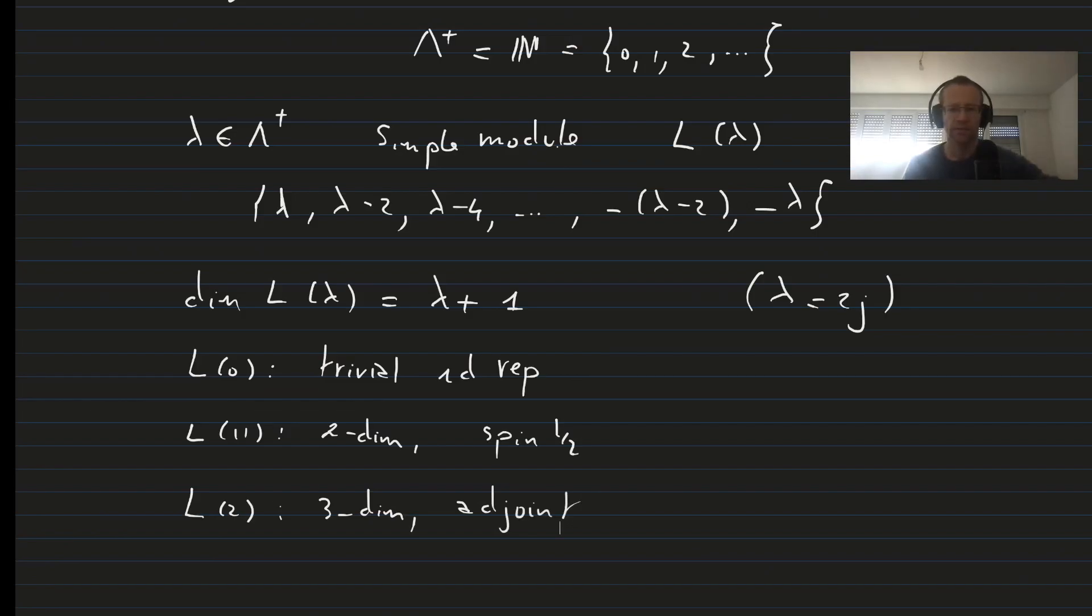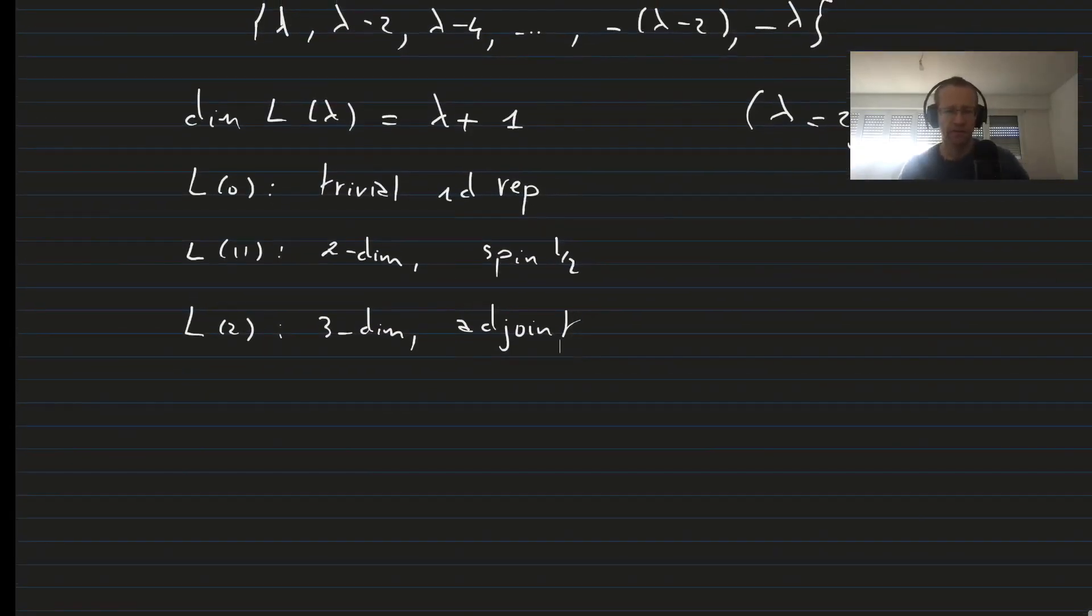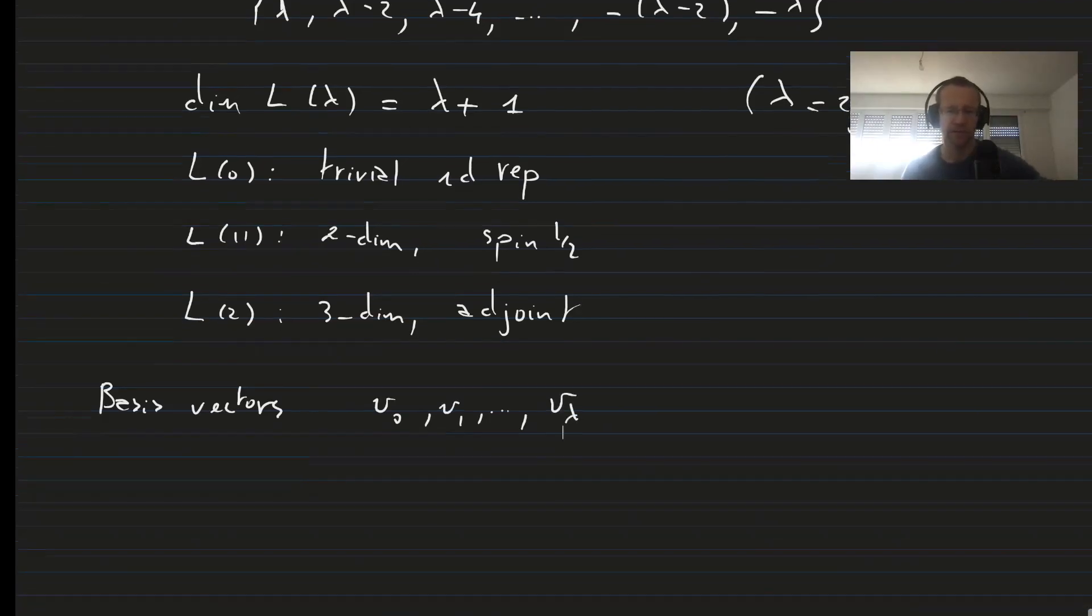Let's introduce some basis vectors, as well as how the algebra acts on them. So our basis vectors will be V0, V1, all the way up to V lambda, such that we have indeed lambda plus 1 of them.